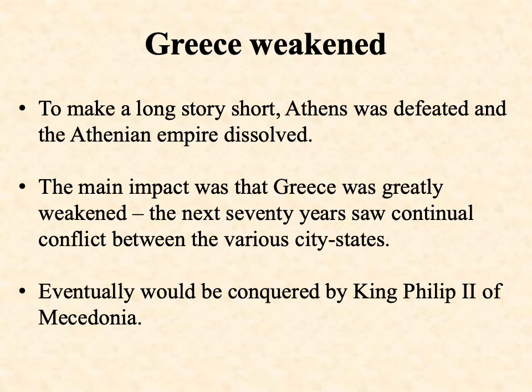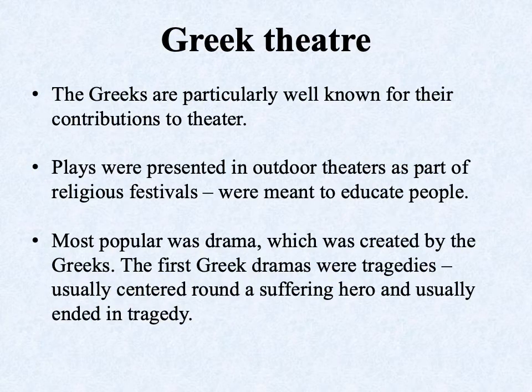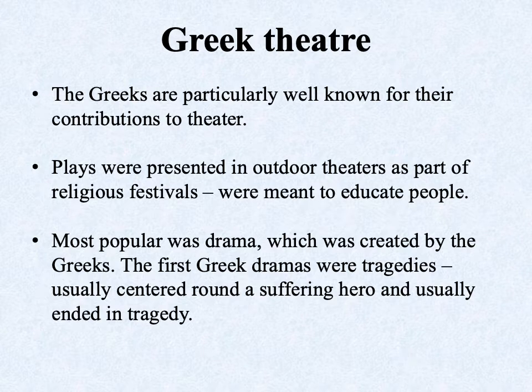Macedonia was a kingdom emerging to the north of Greece that adopted much of Greek culture as its own but was never really seen as fully Greek. Philip II of course is the father of Alexander the Great. Before we get to him, I want to look at certain cultural developments associated with the Greeks. Beyond the political developments we've already discussed, one really important area of Greek influence is theater. How we think about theater today is pretty much derived from the Greeks.